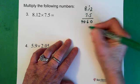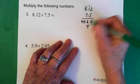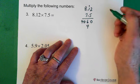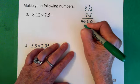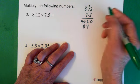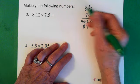7 times 2 is 14. So the 4 goes here and the 1 goes up here. 7 times 1 is 7. We add the 1 and we get an 8. 7 times 8 is 56.